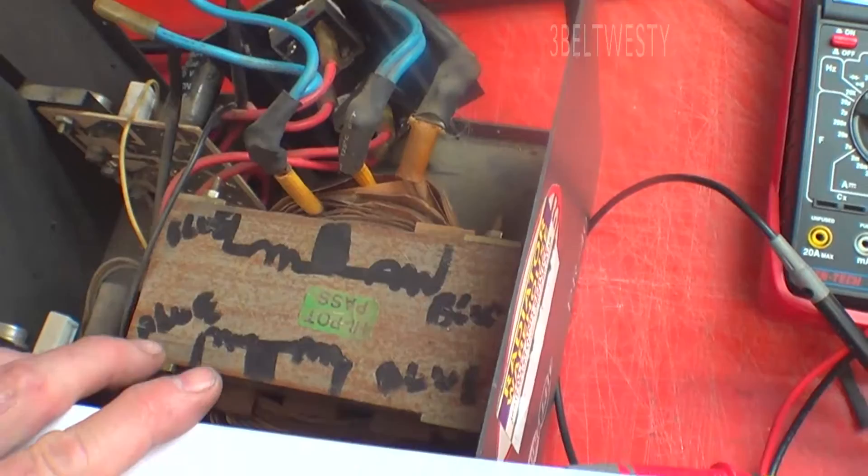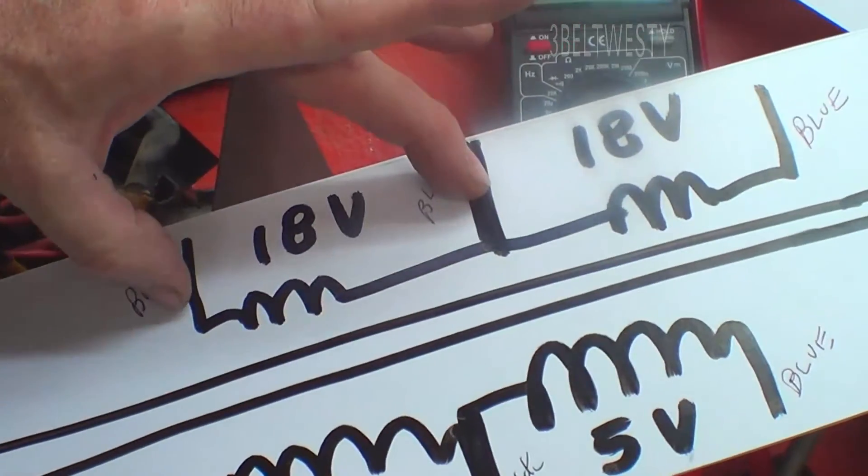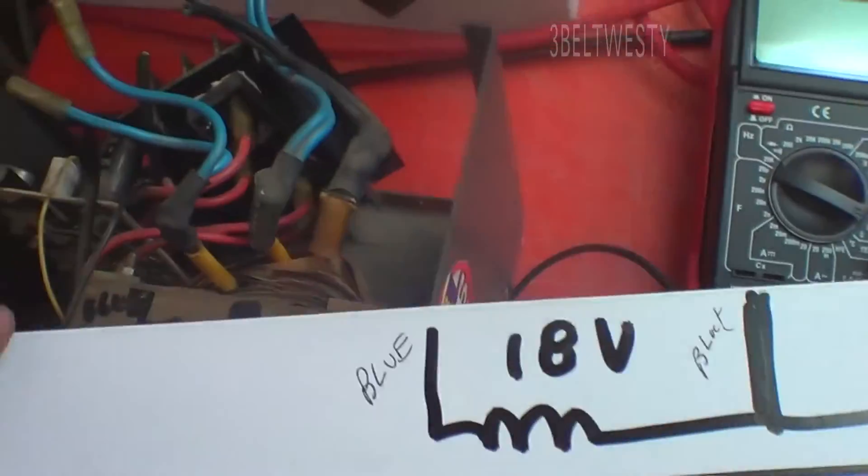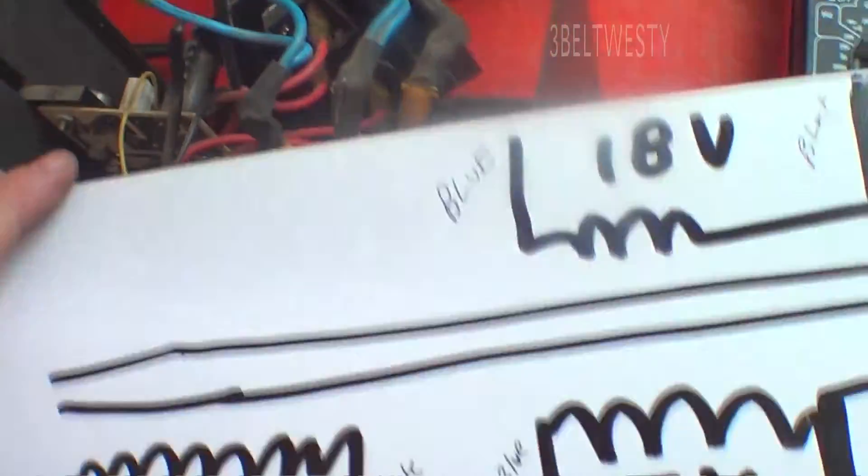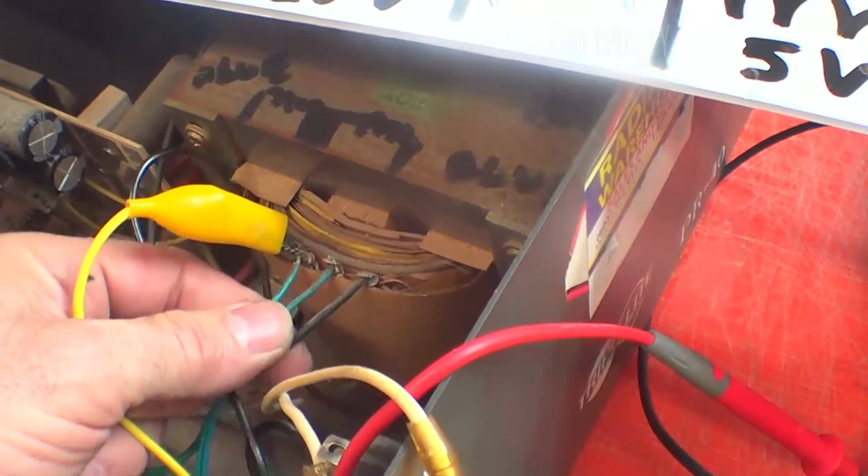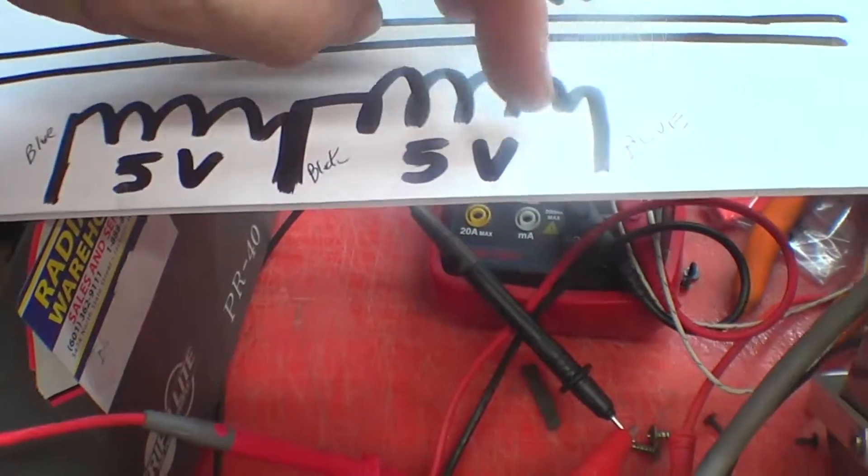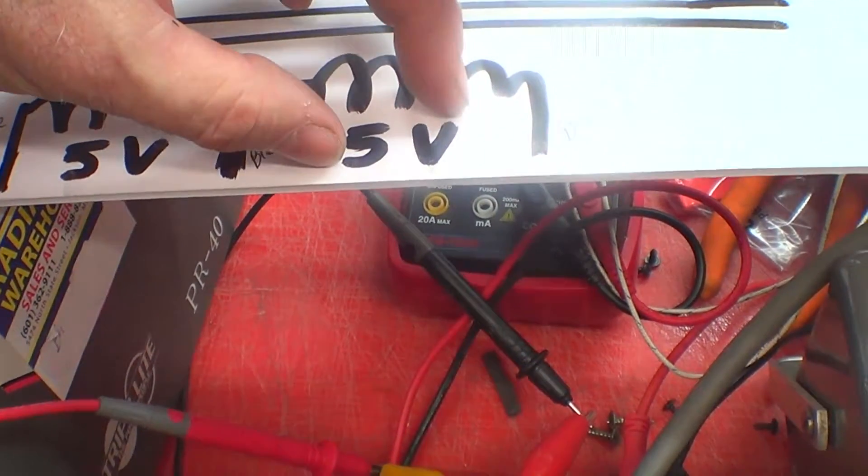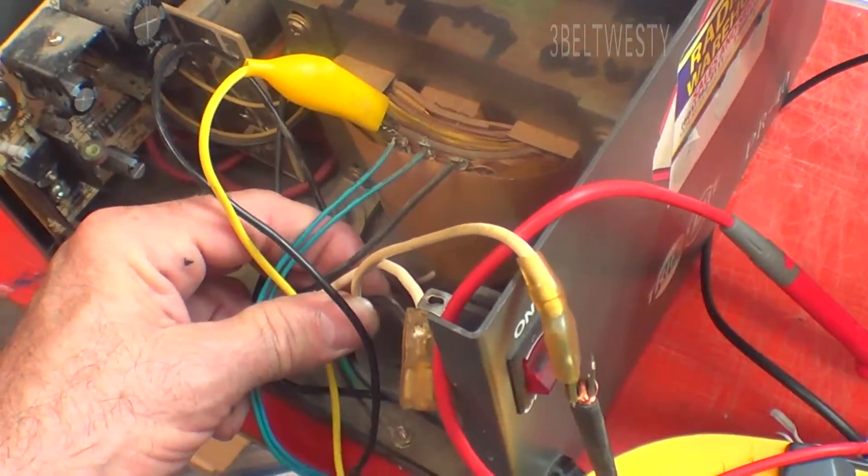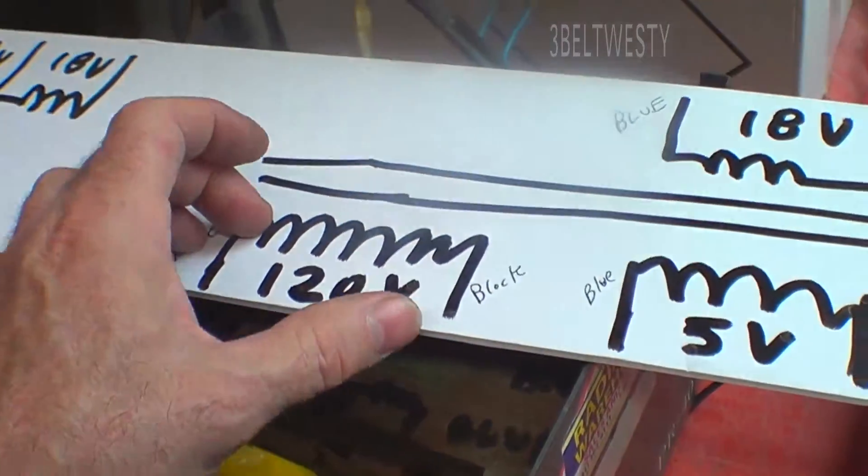A big output transformer on here. Got 18 volts, 18 volts, 36 center tap, that's here. The little guy that powers the regulator board, he's got a 5. On mine, this was a 1.8. This is screwed up, and the input is 120 volts AC here on the winding.